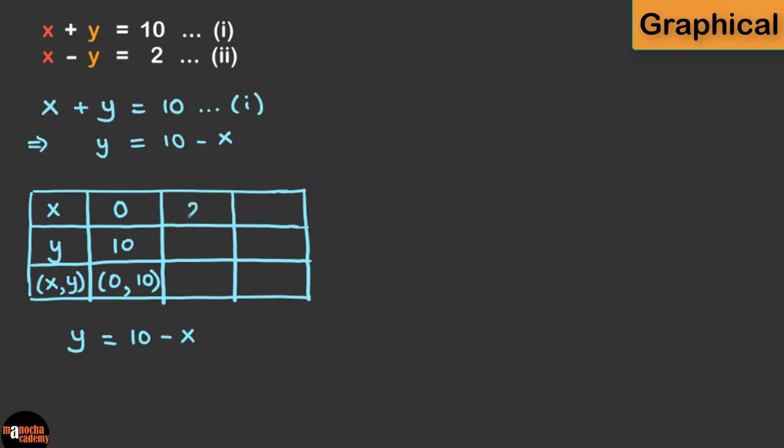Let's fill it in the table and we have our first point x comma y which is 0 comma 10. Next, let's take x equal to 2. You should take such values of x so that the point x comma y fits in the graph. Again on solving, we get y equal to 8. So our second point is 2 comma 8. Note you can also take negative values of x. For the third point, let's take x equal to 3. And on solving, we get the point as 3 comma 7.